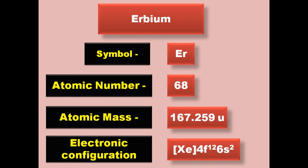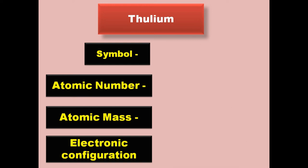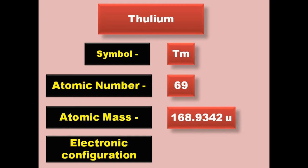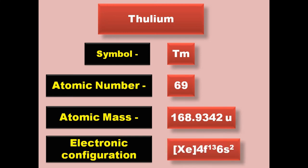Thulium has symbol Tm, atomic number 69, atomic mass 168.9342, electronic configuration [Xe] 4f13 6s2. Thulium is a lanthanide and exists in solid form at room temperature.